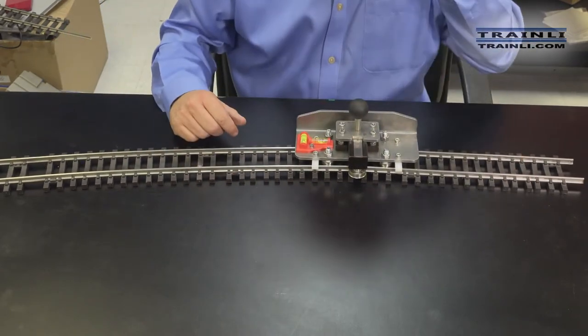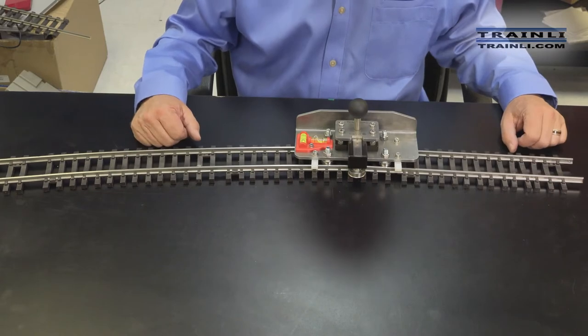And you can get a nice curve even with your stainless steel rails. A little bit harder to turn, but it will still bend stainless steel quite nicely.